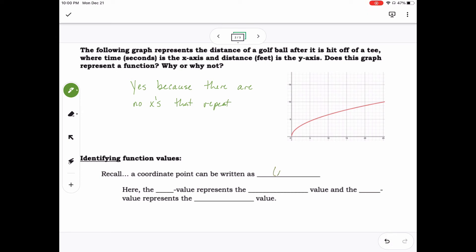Now I'd like you to recall, a coordinate point can be written as (x, y). Here the x value represents the input and the y value represents the output.